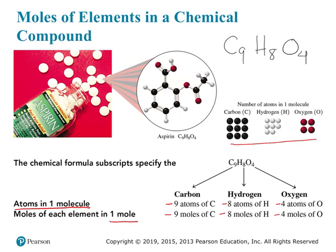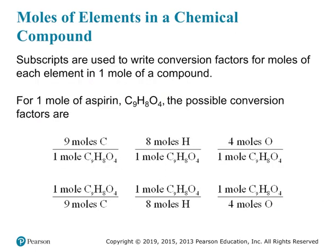We can use these ratios to our advantage. For instance, we can write different conversion factors for one mole of aspirin: nine moles of carbon per one mole of aspirin, eight moles of hydrogen per one mole of aspirin, or four moles of oxygen per one mole of aspirin. Of course, you can flip all of those conversion factors — the bottom row just shows the opposite, with one mole of aspirin in the numerator.